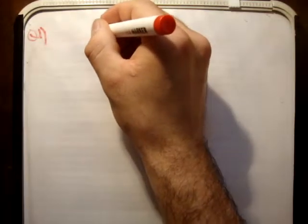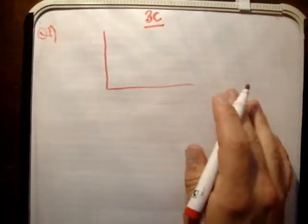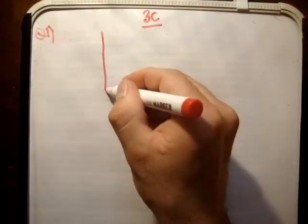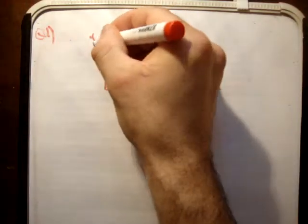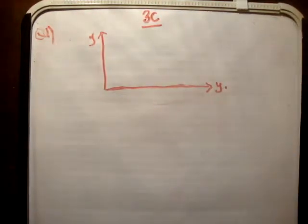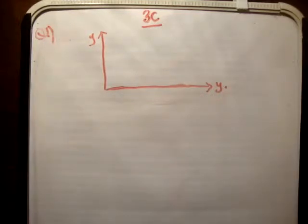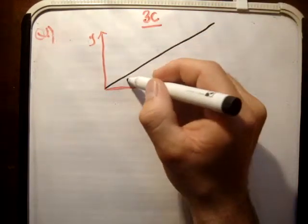The first thing we need to do is sketch the motion itself. I'm going to draw my y axis and my x axis making my xy plane. And I'm going to draw in black, for a reason you'll see in a moment, the incline. We know the incline is at an angle beta to the horizontal.